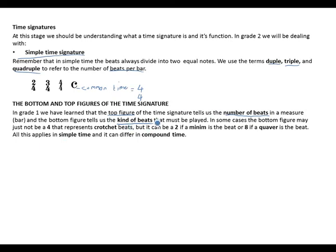The bottom figure tells us the kind of beats we will find in a bar. In some cases the bottom figure may not just be four — four represents crotchets. But it can be two if a minim is the beat, or eight if a quaver is the beat. All this applies in simple time and it can differ in compound time.